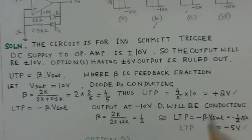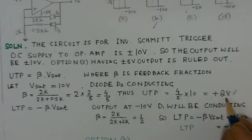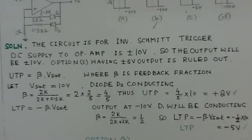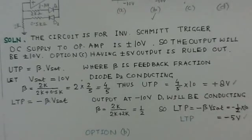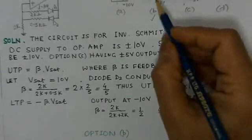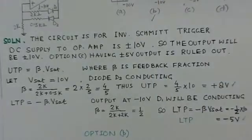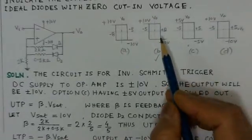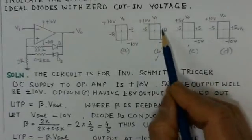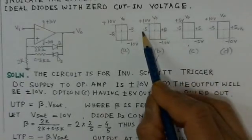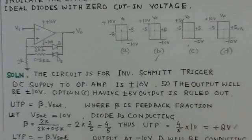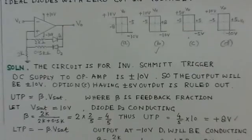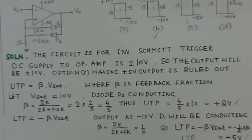So the UTP point is plus 8 volts and the LTP point is minus 5 volts. Therefore option B, which shows plus 8 and minus 5, is the correct choice for this problem.